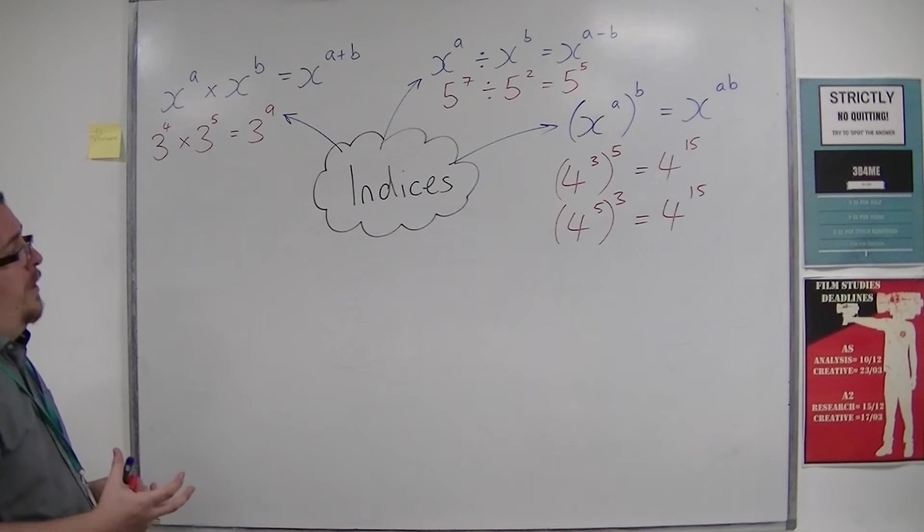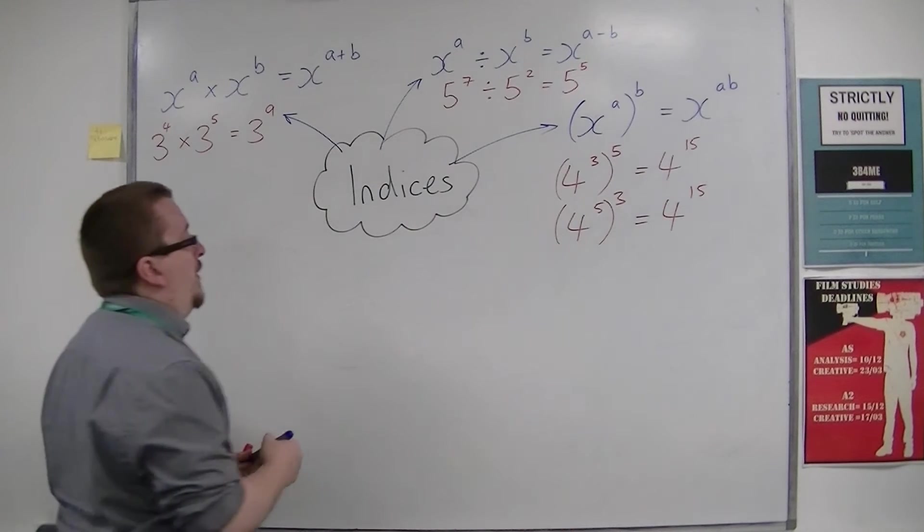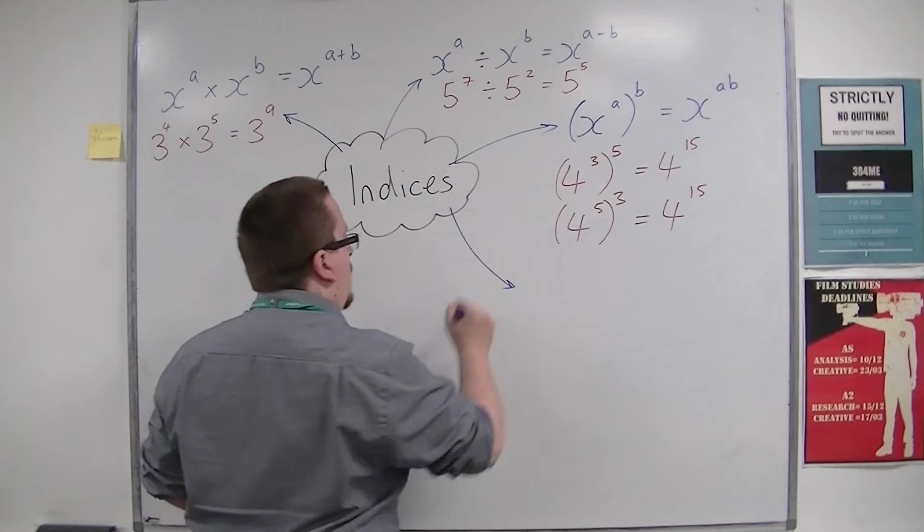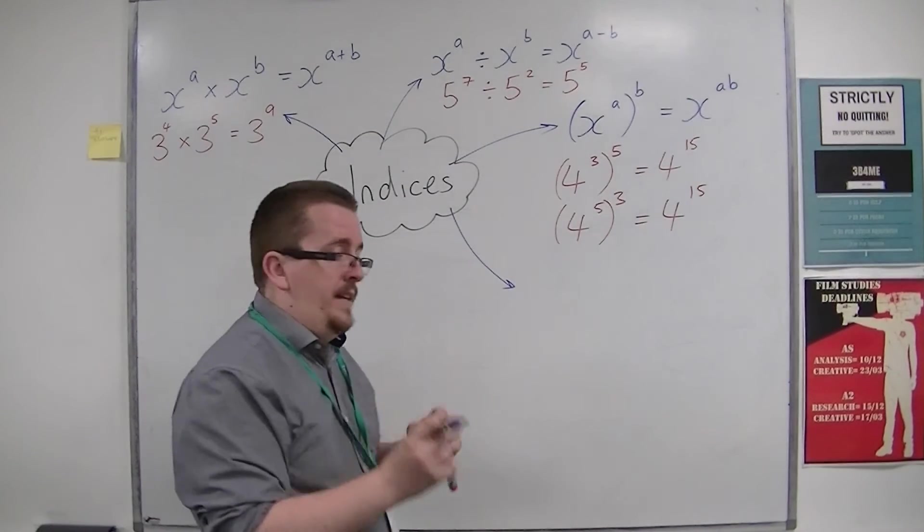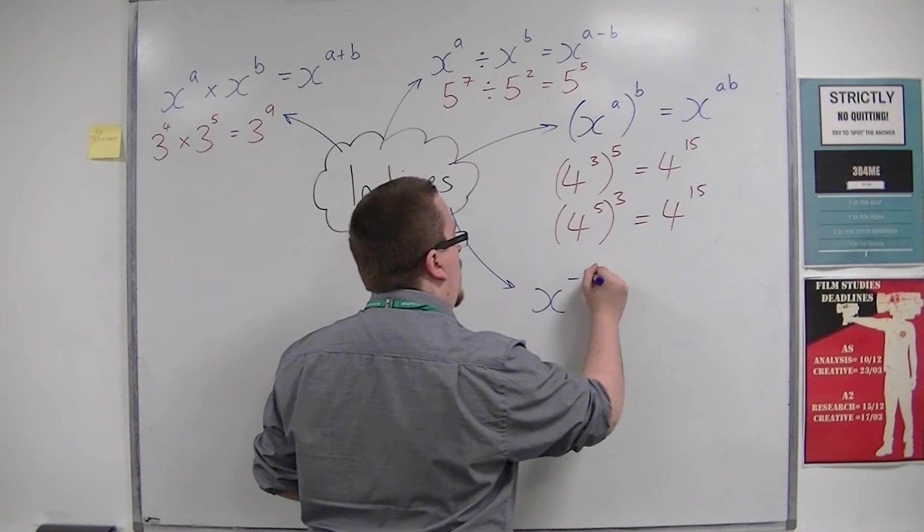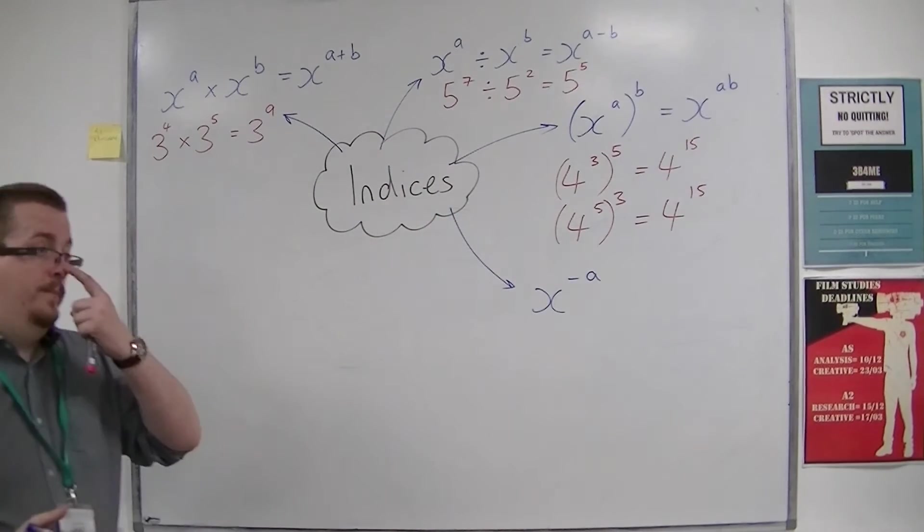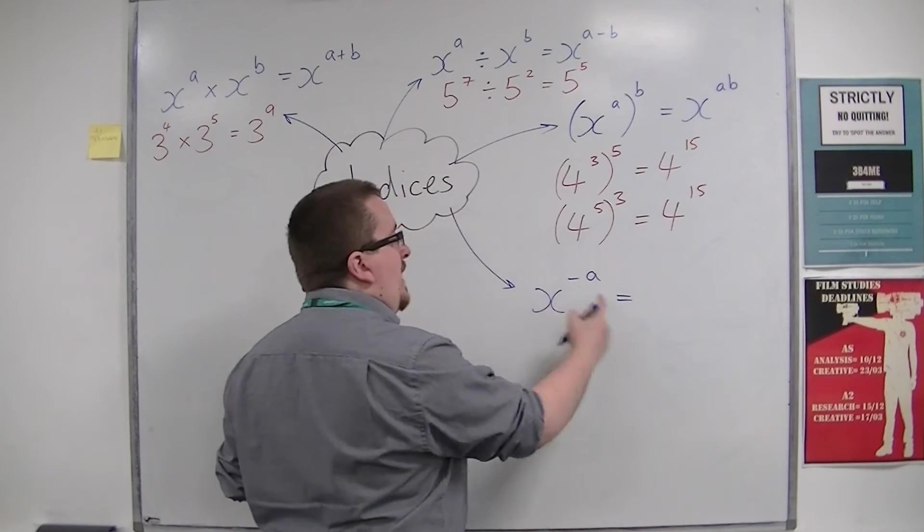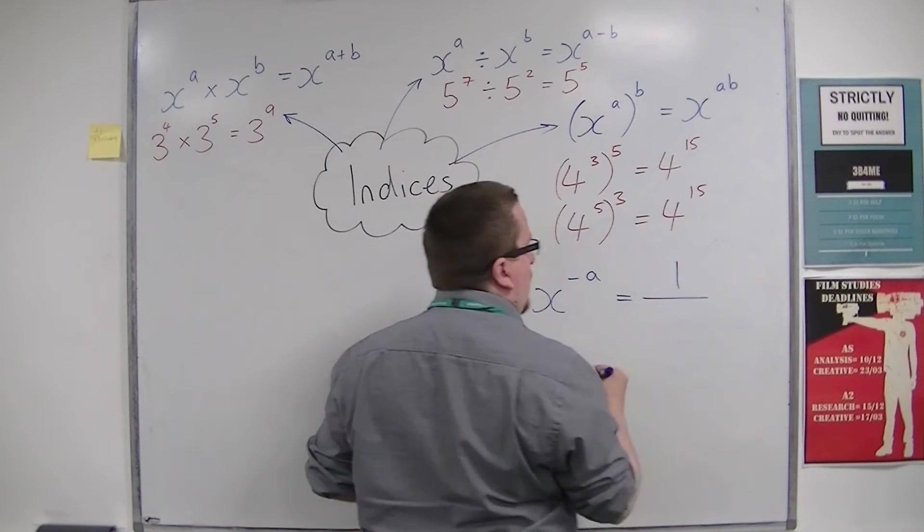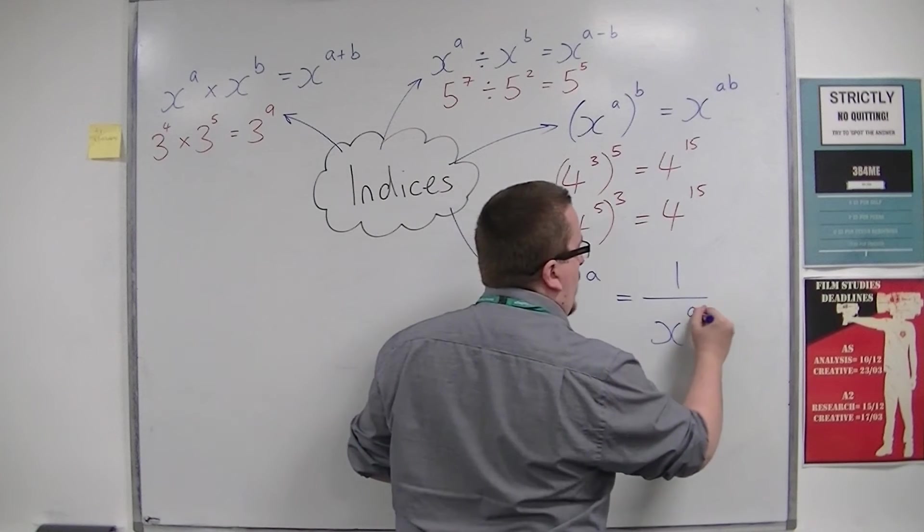What else have we got? There's also understanding what we mean by a negative index. So x to the power of minus a. If you have a negative index, then this means that it is 1 over x to the power of a.